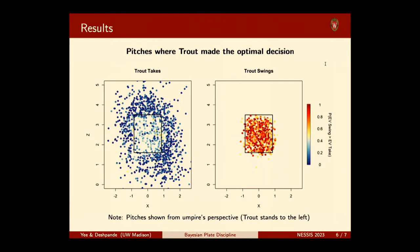Now let's talk about some results. This is a visualization of all pitches where Mike Trout made the optimal decision in the 2019 season. On the left-hand side, we have pitches where Trout took and our model said he should take. On the right-hand side, pitches where Trout swung and our model agreed he should swing. The pitches are colored by our posterior certainty that swinging gives more expected runs than taking. The darker the pitch, the more certain we are that the decision Mike Trout made was the correct one. These graphs do a pretty good job of showing that this model fits with what our intuition would say.